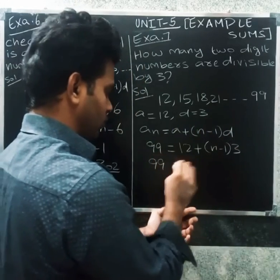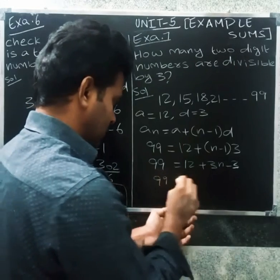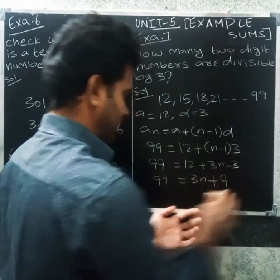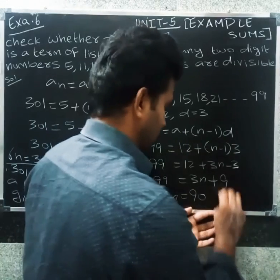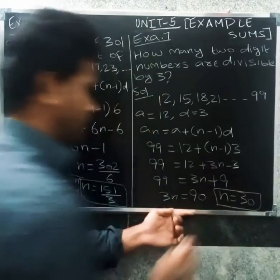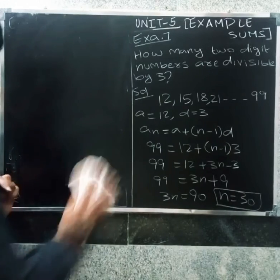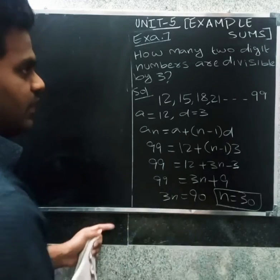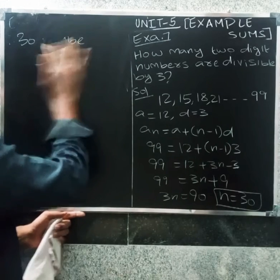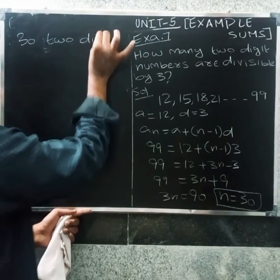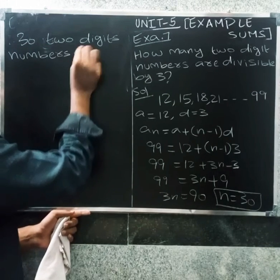So 99 = 12 + 3(n−1), which gives 99 = 3n + 9. Then 99 − 9 = 3n, so 3n = 90, therefore n = 30. There are 30 two-digit numbers divisible by 3.